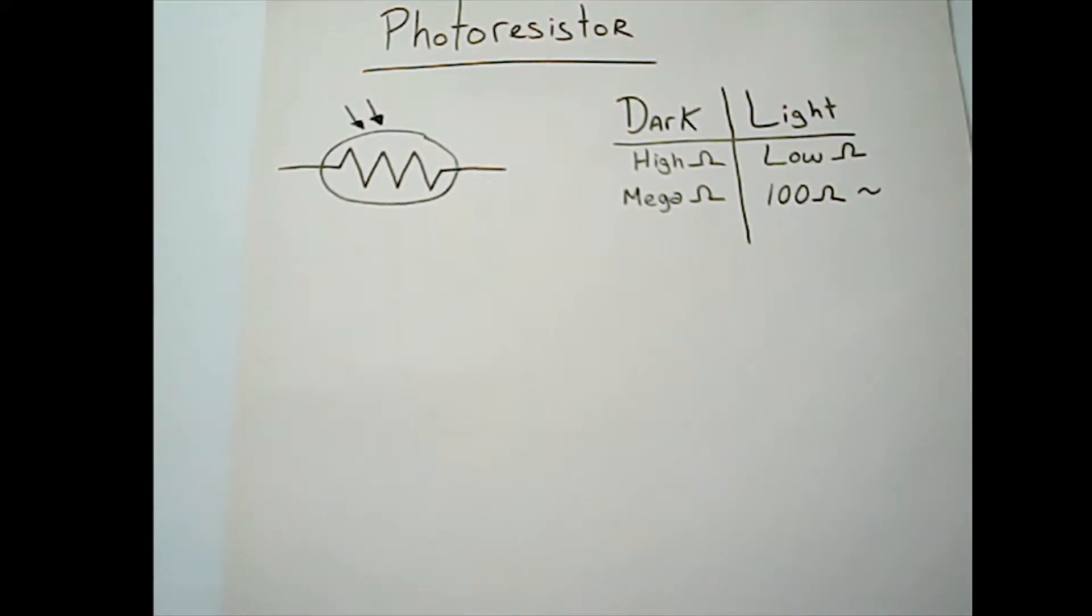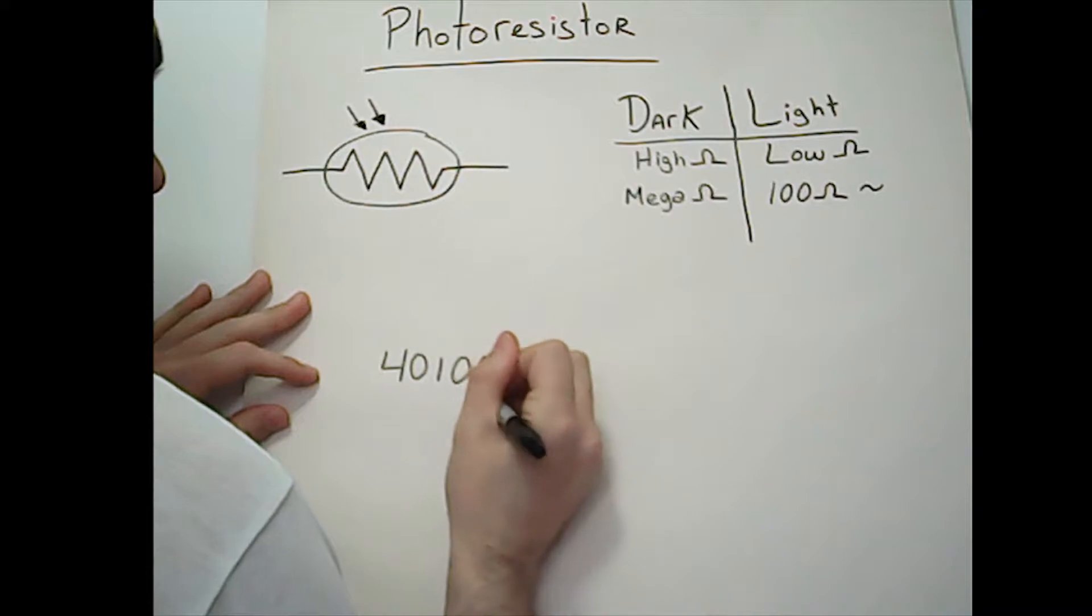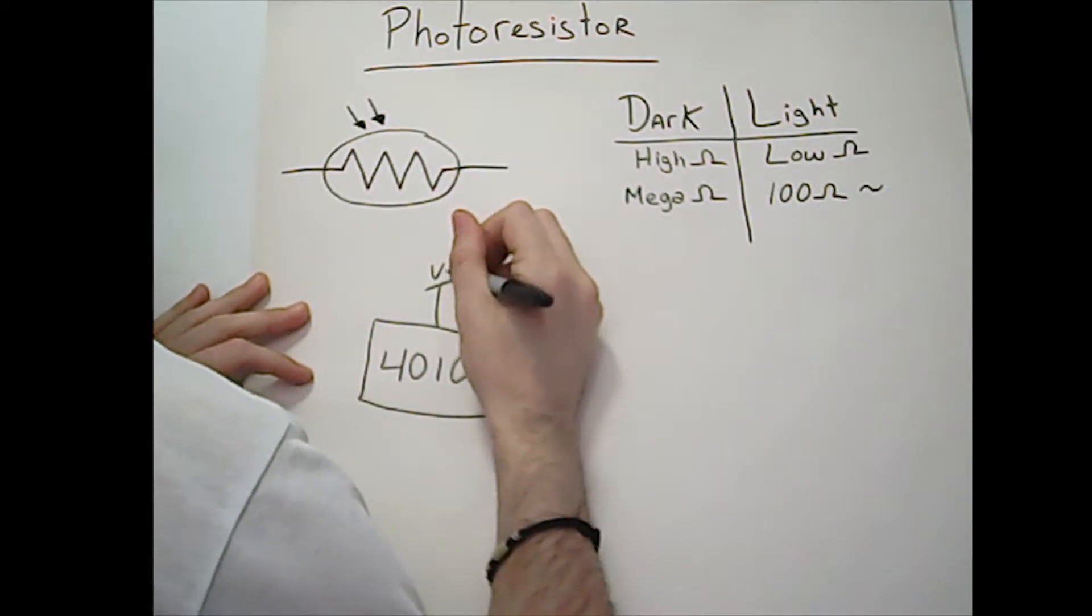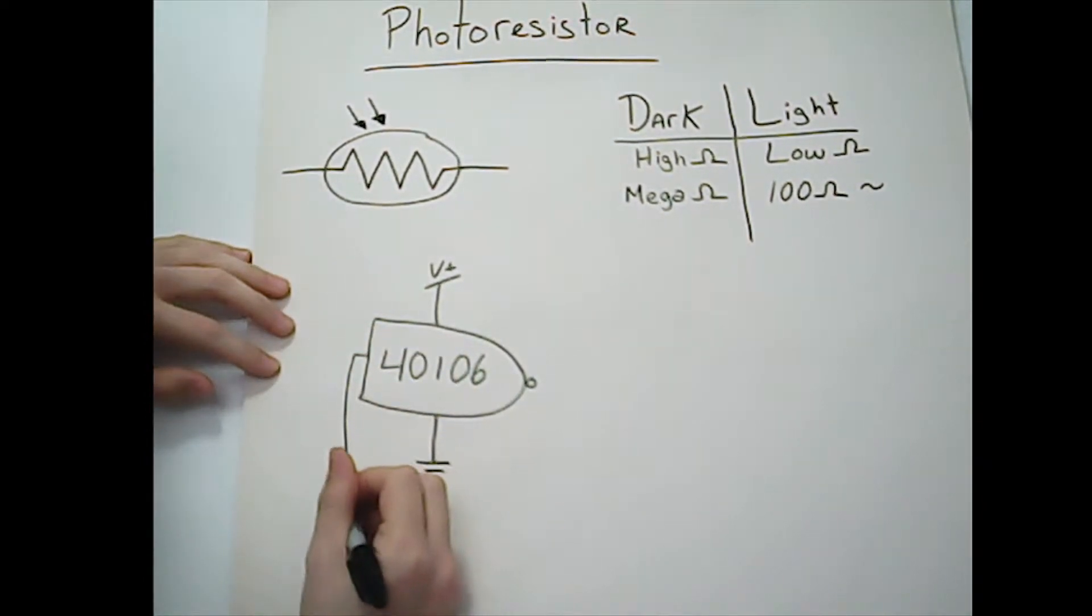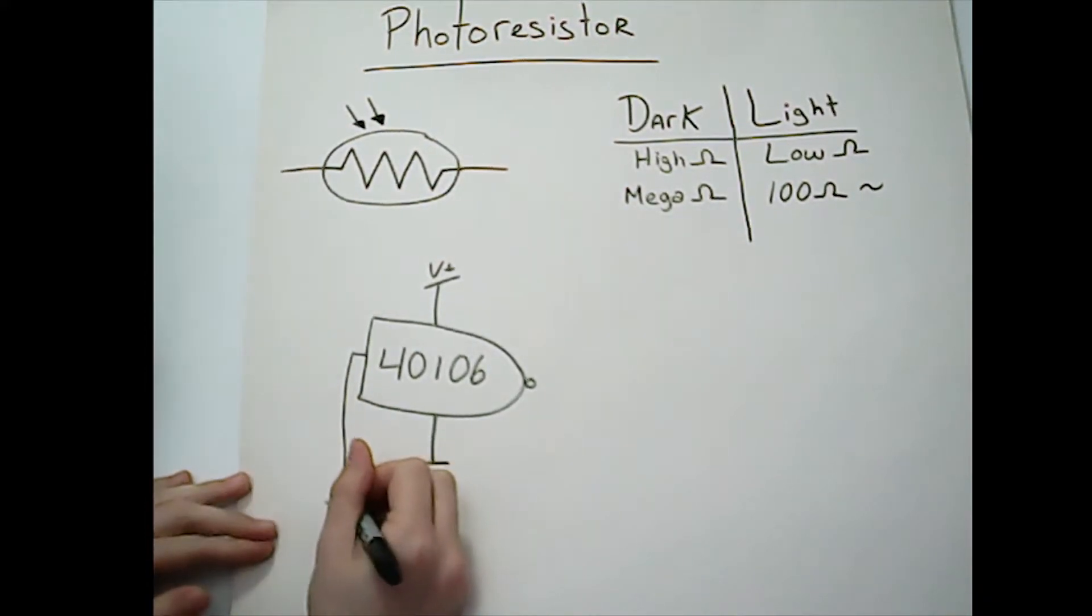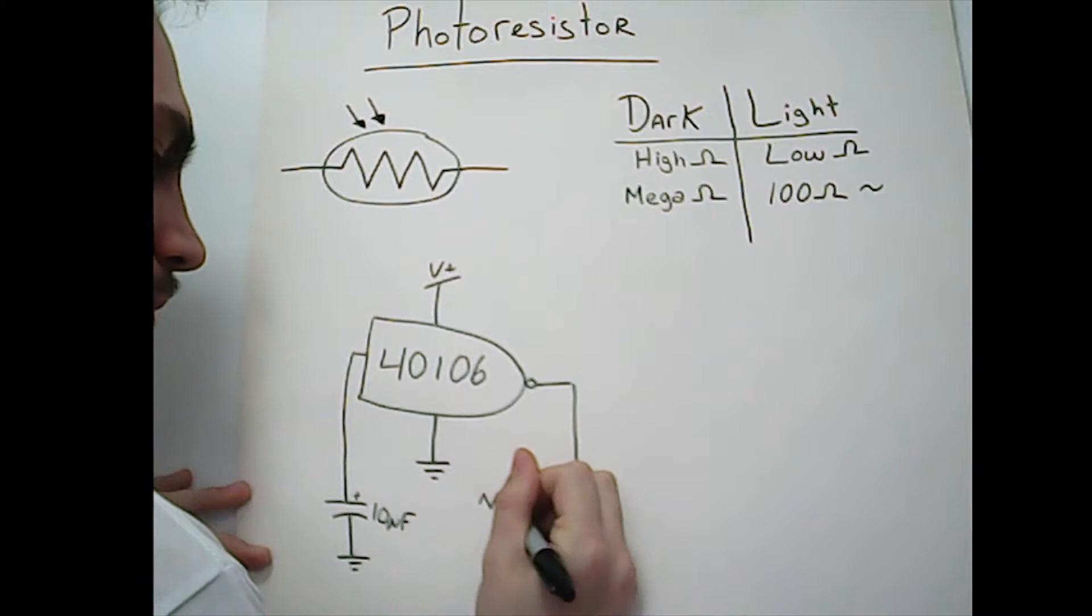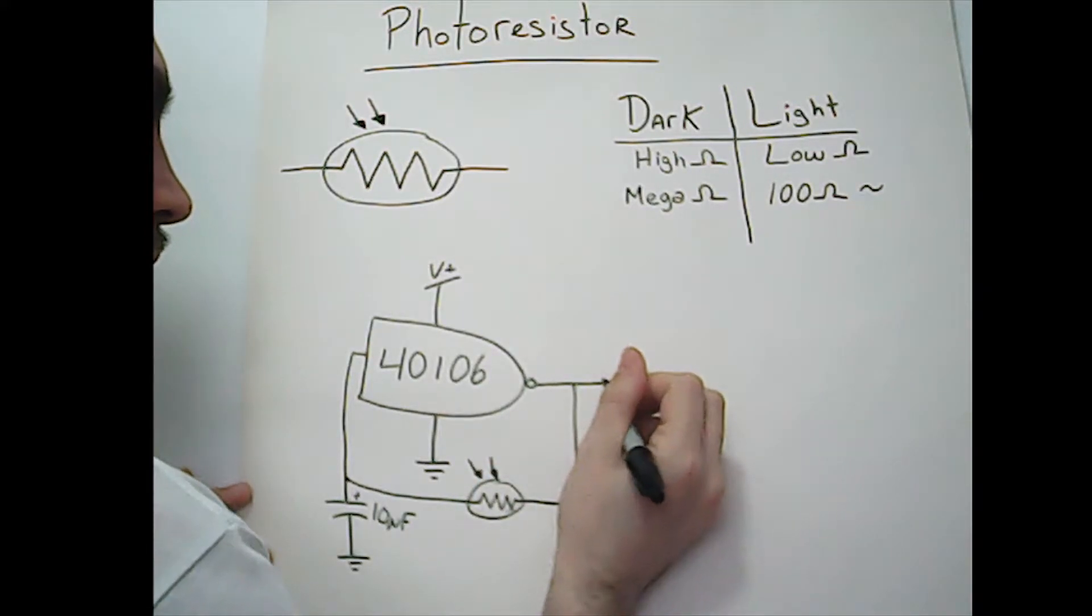So what we want to experiment today is to control the pitch of an oscillator with a photoresistor. Let's take our first build project with the CD40106. We put the power normally, we add a 10 microfarad capacitor from input to ground, and instead of using a 10k potentiometer, we will tie the photoresistor from output to input. In that case, the pitch of the oscillator will be controlled by the amount of light going into that photoresistor.